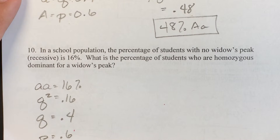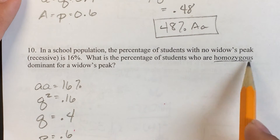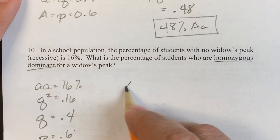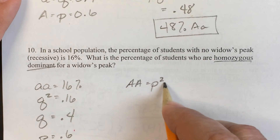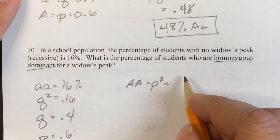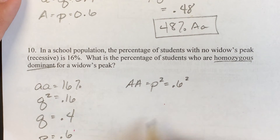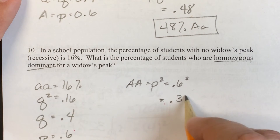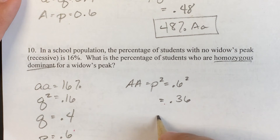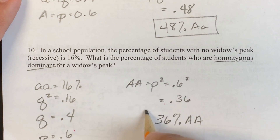Now we have the keys to the kingdom. The question asks for the percentage of students who are homozygous dominant — that's big A big A, which is our p squared. We have 0.6 squared, which equals 0.36, so that is 36% homozygous dominant.